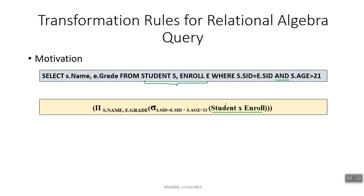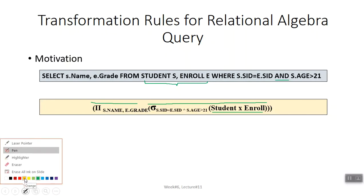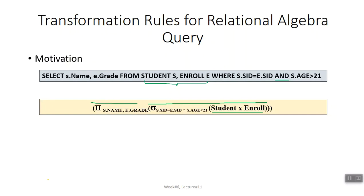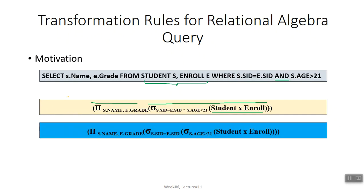Is query ko execute karne ka ek tareeqa yeh hai ke pehle Student aur Enroll ka Cartesian product hoga, uske result ke upar sigma apply hoga jahan pe s.sid equals e.sid AND s.age > 20, aur uske result par end of the day pi apply hoga. So this may be one path.